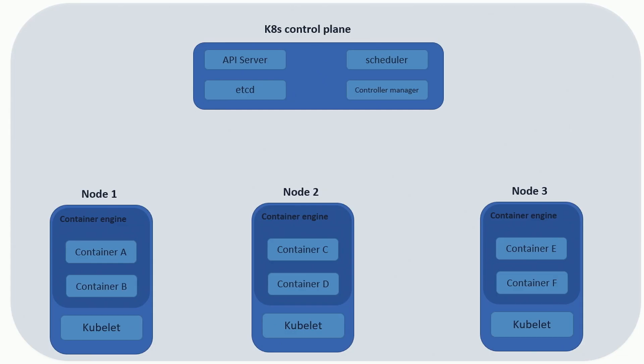Kubernetes has two main parts: the control plane and the nodes. The control plane manages the cluster and has multiple components. What's especially interesting for us is the API server. The Kubernetes API server is the front end of our cluster — every request goes through it. For example, if I want to deploy a new container, I send a request to the API server. The nodes run the actual containers and on each node there is an agent called Kubelet, which allows Kubernetes to manage the nodes.